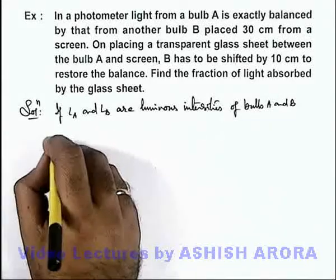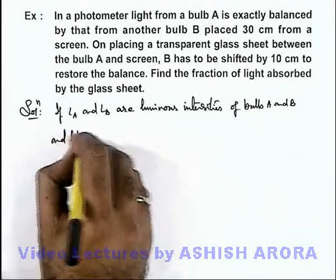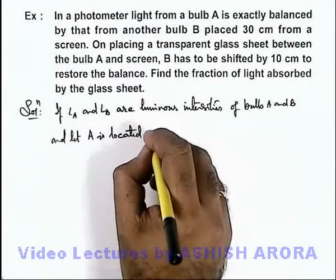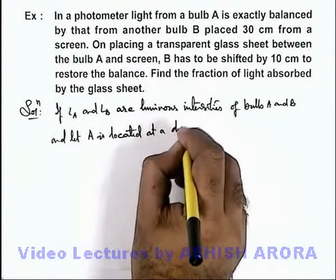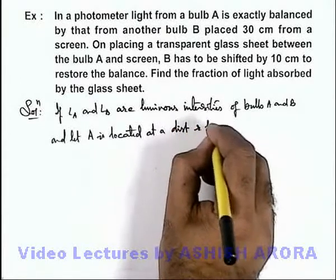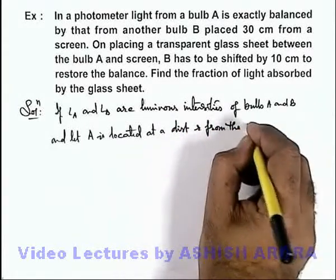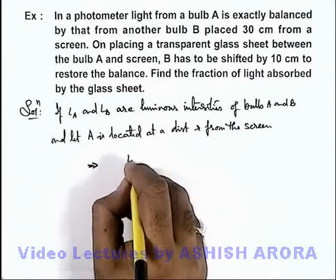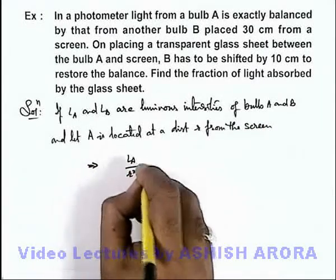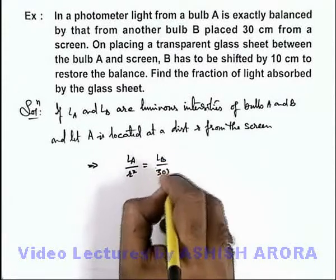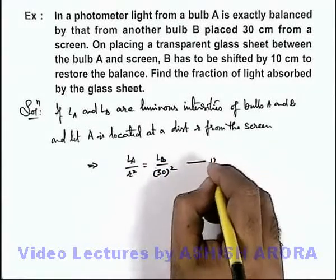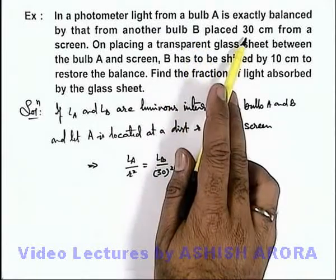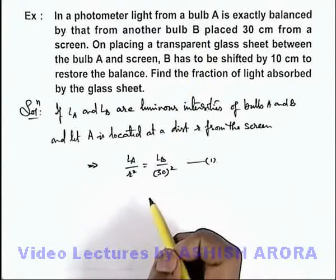and let A is located at a distance r from the screen, this implies we can write LA by r square equals LB by 30 square. This is equation 1 because it is given that when B is placed at 30 centimeters it will balance the intensity of light from bulb A.